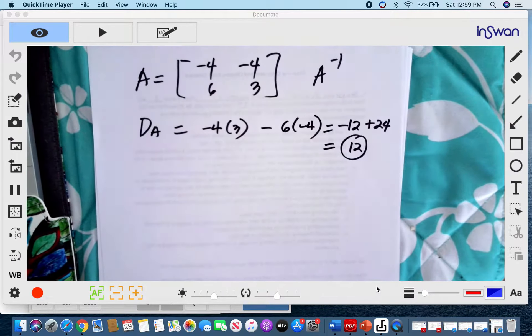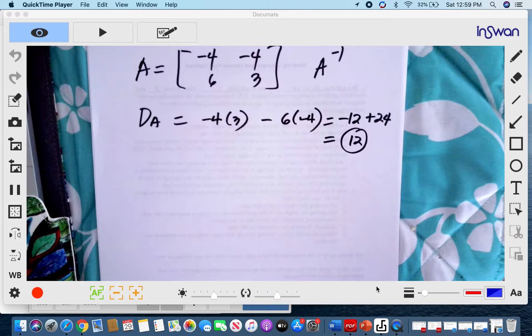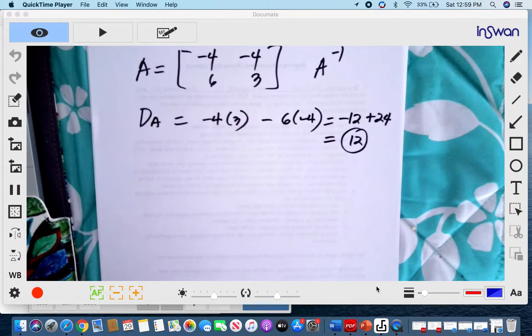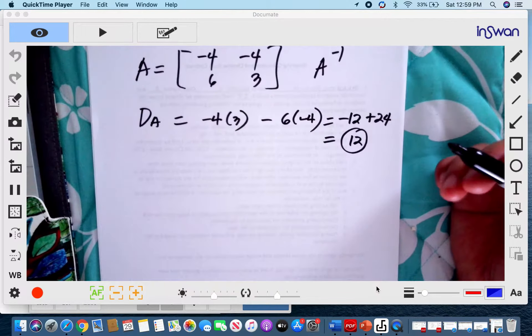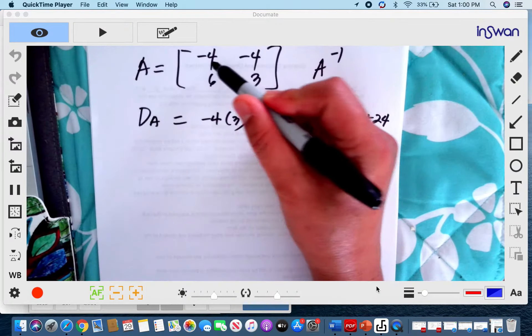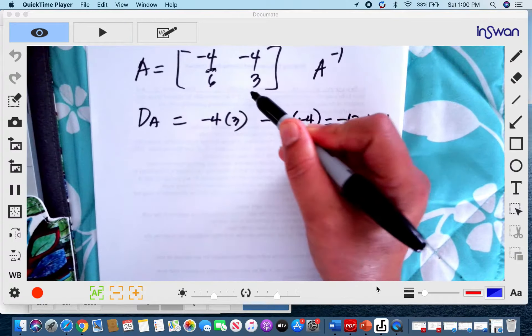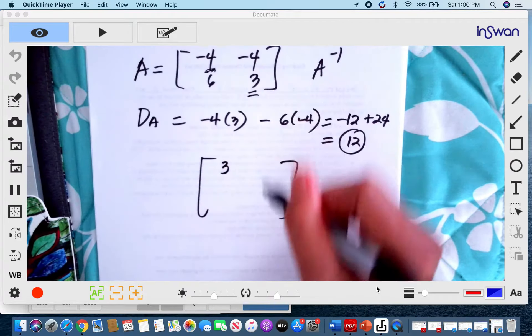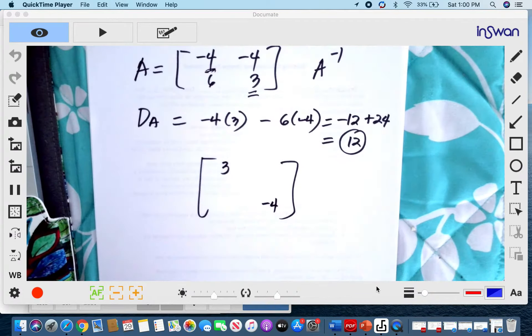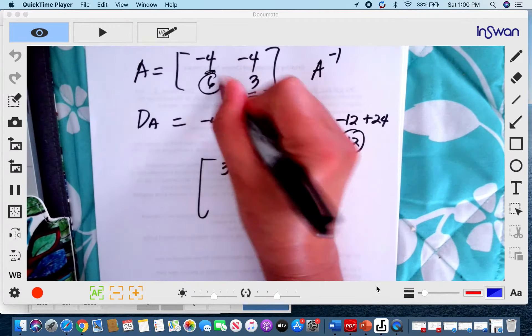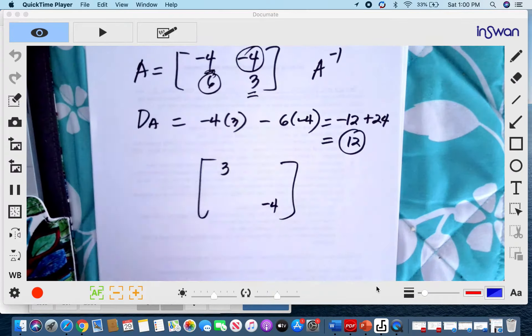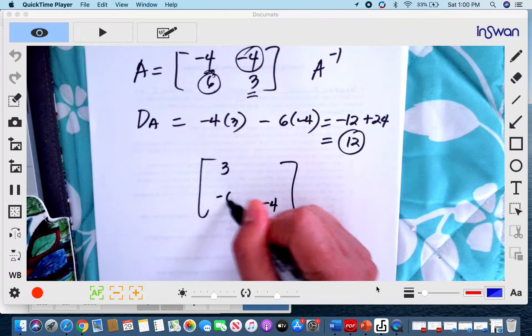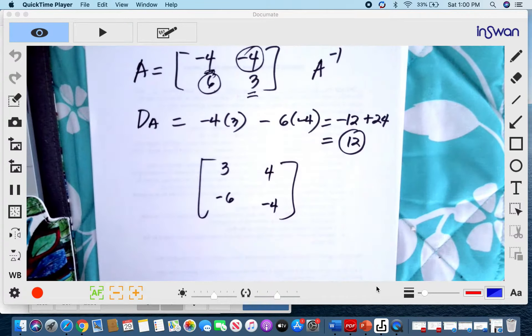The next step is to find a new matrix from A using a certain rule. First, we switch the position of R11 and R22. So 3 becomes R11 and -4 becomes R22. Then we change the signs of R21 and R12. So 6 becomes negative, and -4 becomes positive.